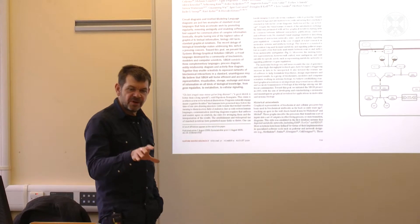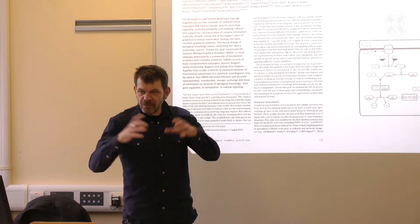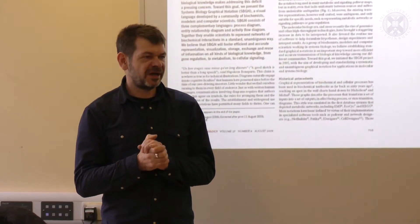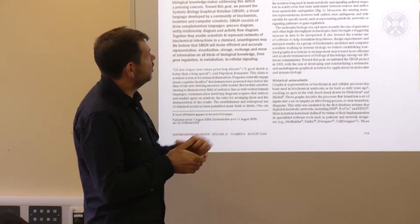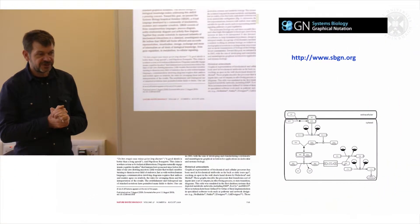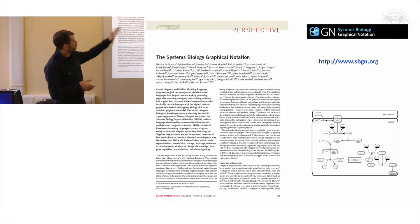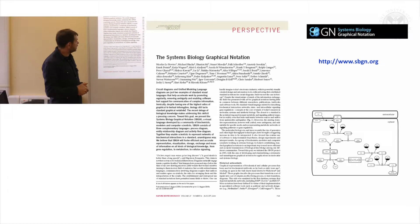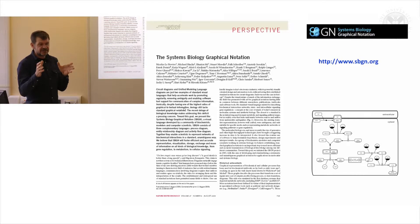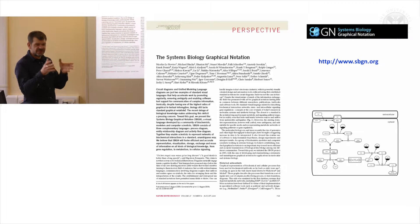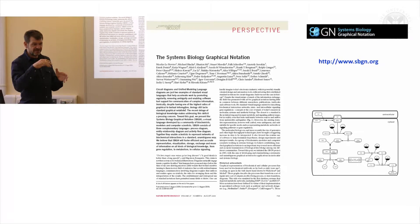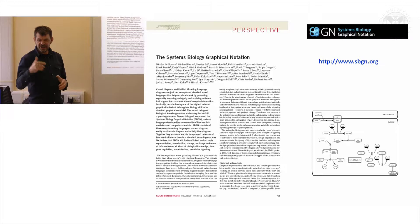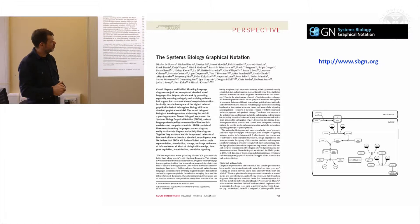A number of years ago, faced with the problem of all these different ways of drawing pathways, there was a great idea to standardise the way that biologists should draw pathways. This became known as the Systems Biology Graphical Notation System. It had support from a lot of people, including quite a number from Edinburgh. It set out a series of symbols and a system of doing things that would allow us to draw pathways in a consistent way.